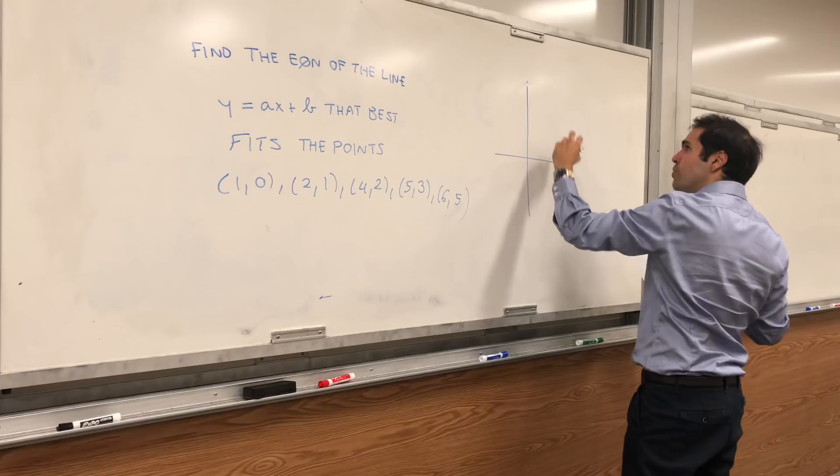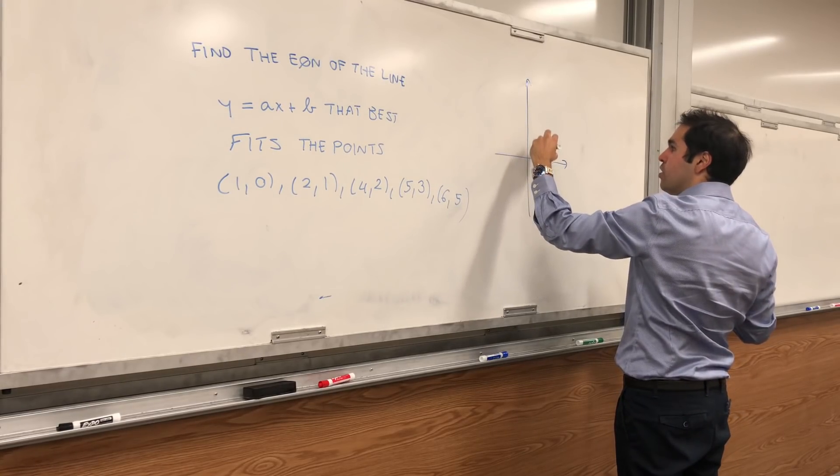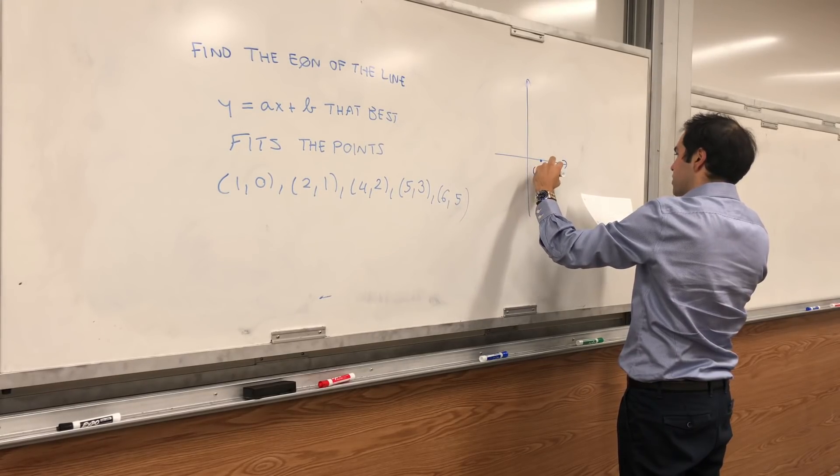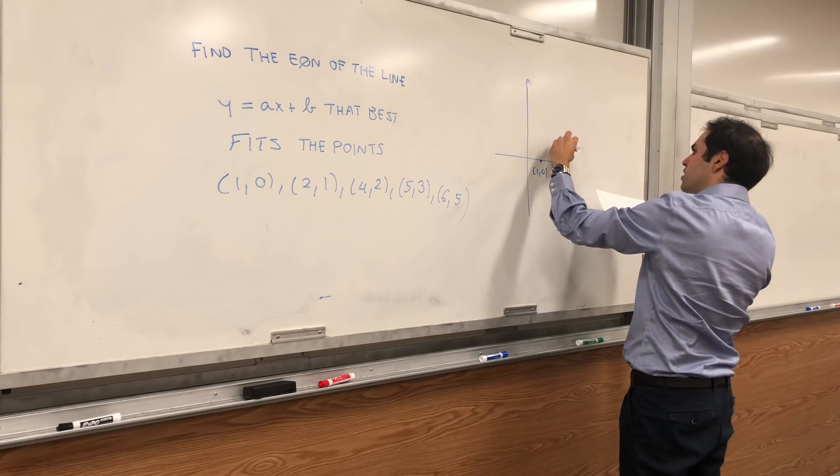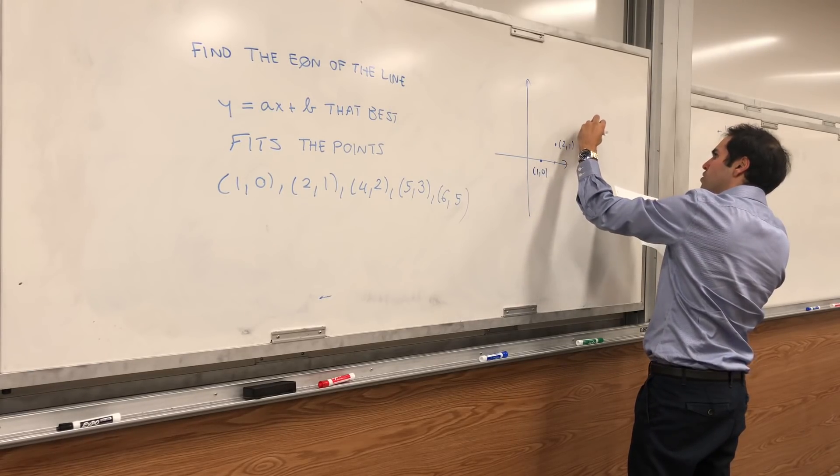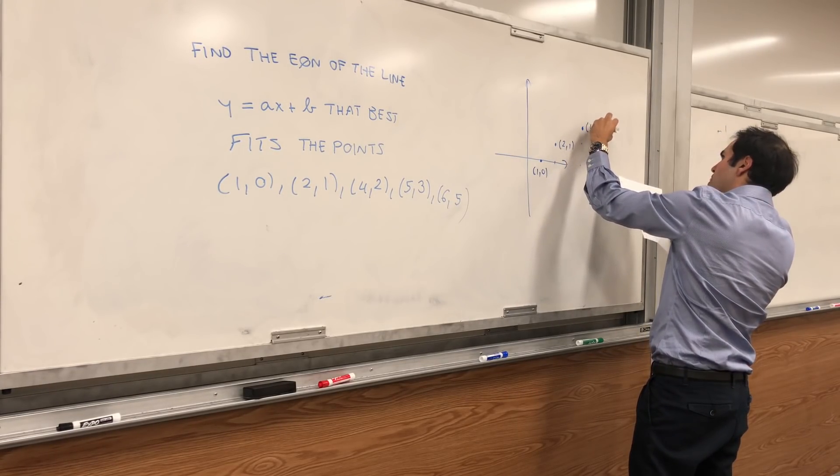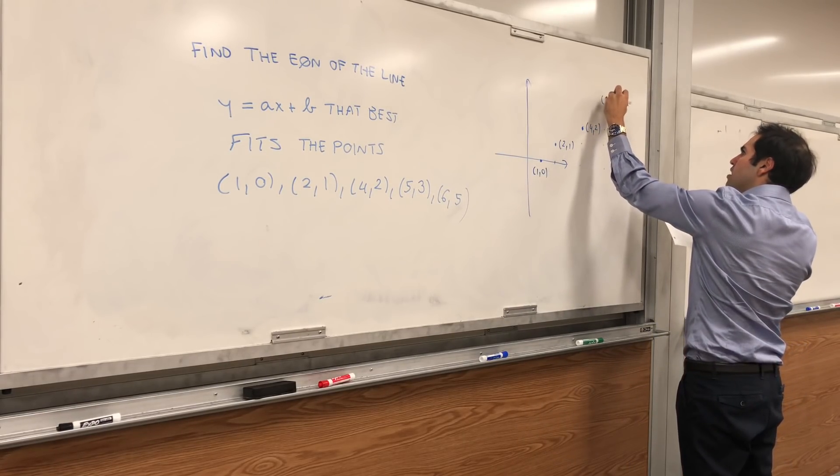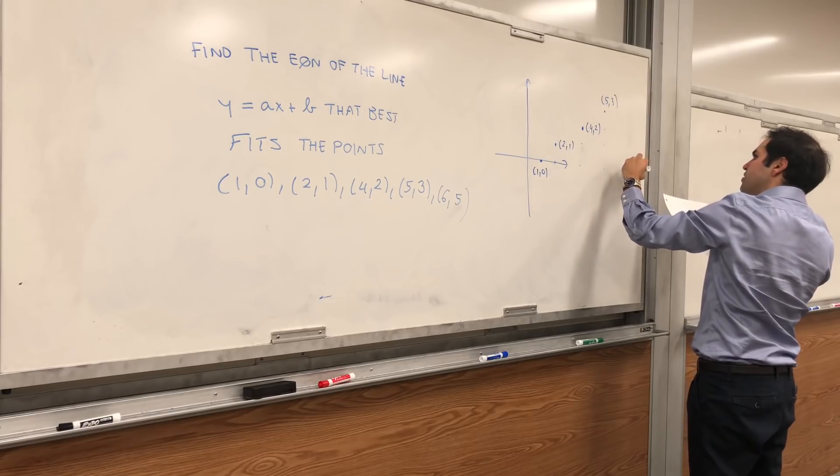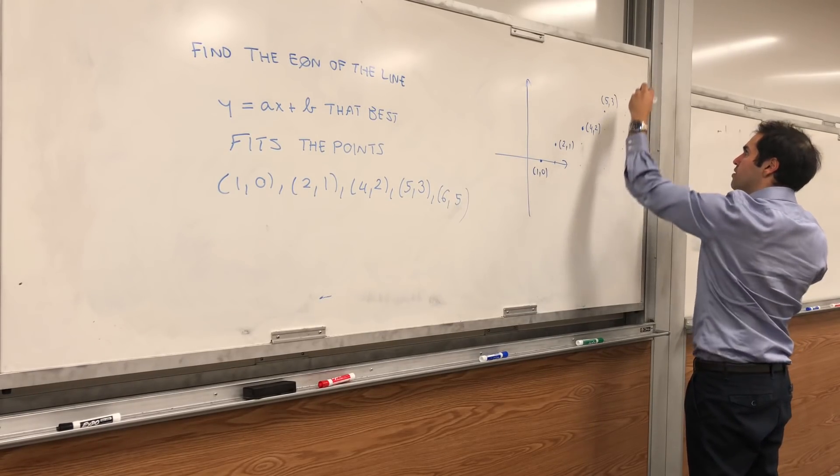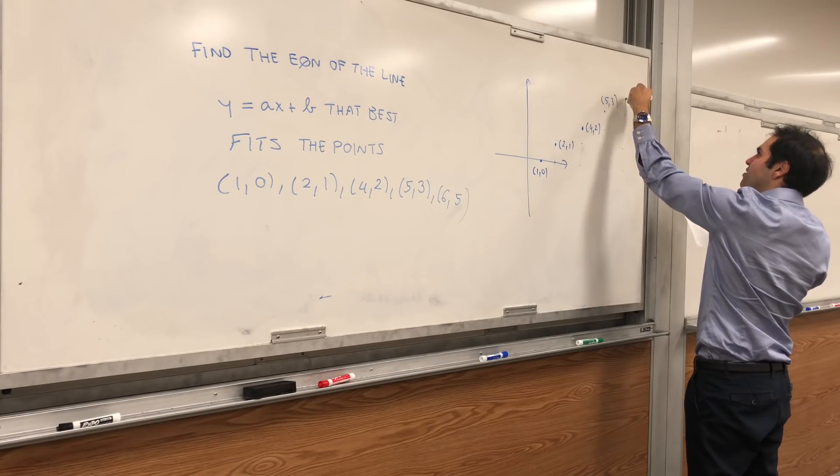So we have those couple of points. (1,0) maybe here, and then (2,1) here, and (4,2), and then (5,3), and (6,5).